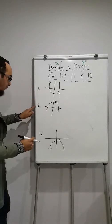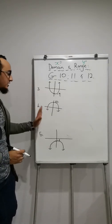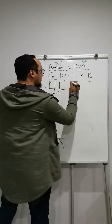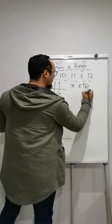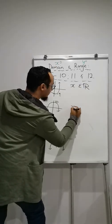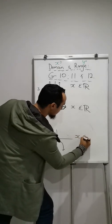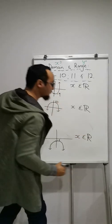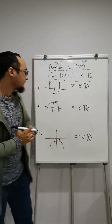Example number 3, 4, and 5. What do I know about them? All of them, that the domains are all going to be the same. So I'm going to write it: x is an element of real numbers, x is an element of real numbers, x is an element of real numbers. What will be different? It will be the y is an element of real numbers section over here.